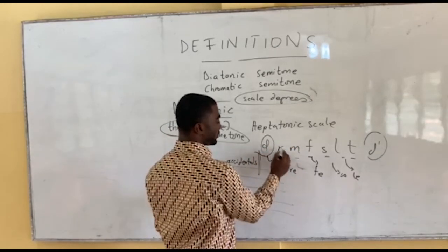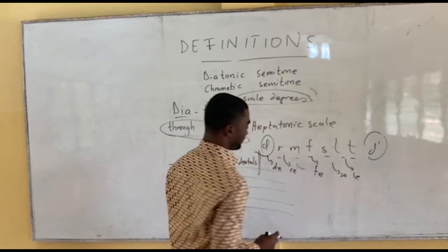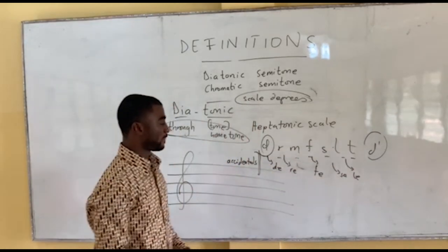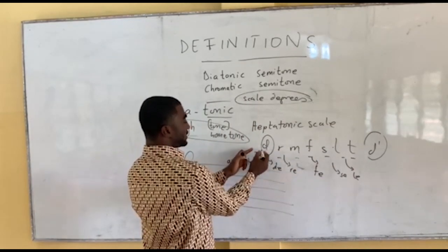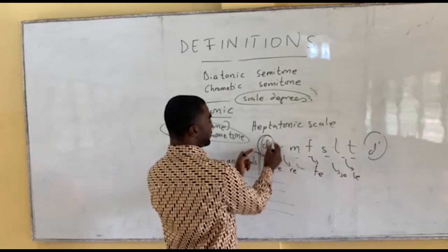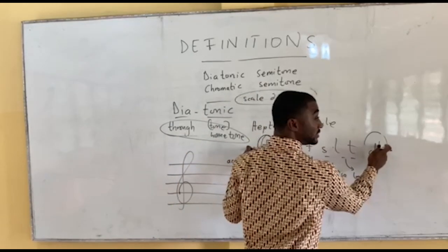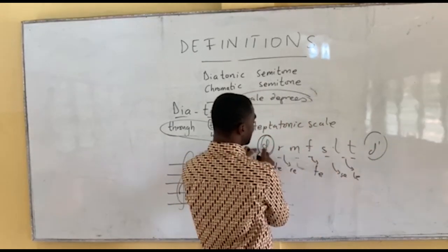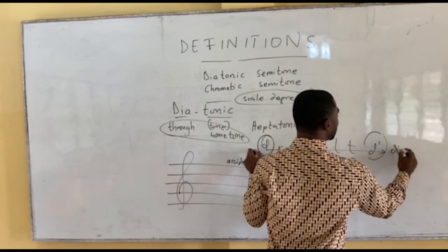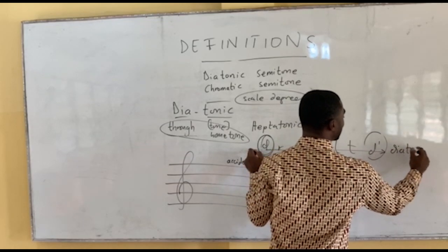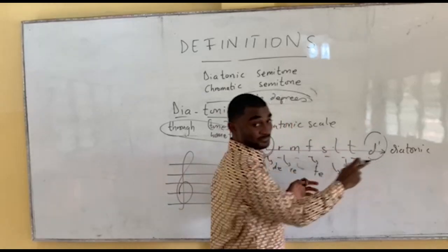One, two, three, four, five, six, seven, eight, nine, ten, eleven, twelve. So, to distinguish them this way: when I move from do, through these notes, to the do, this motion through the do — that is called the diatonic, because it is through the two tonics.